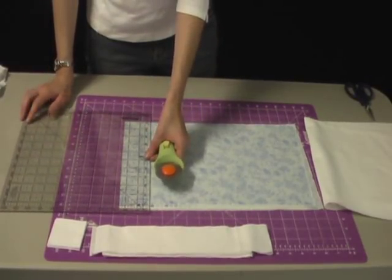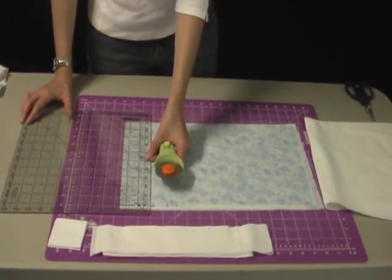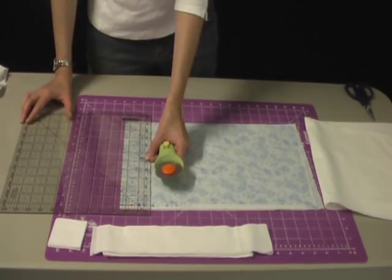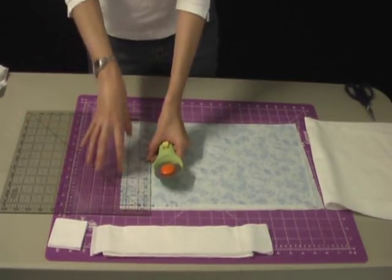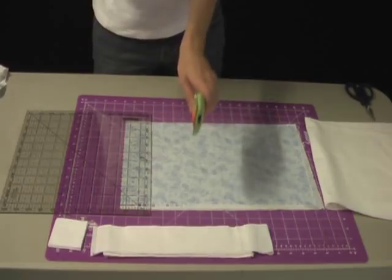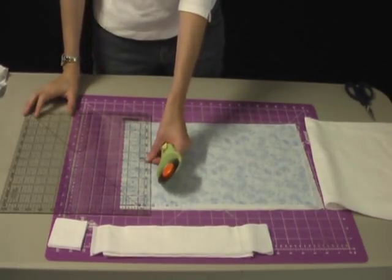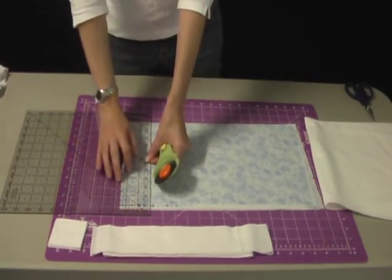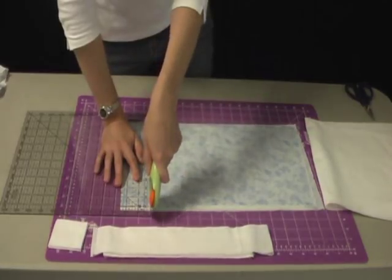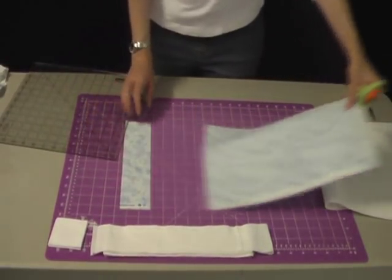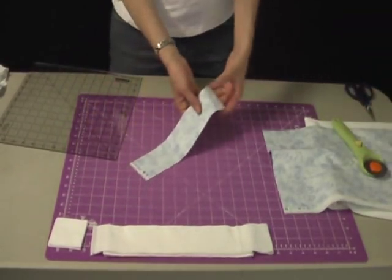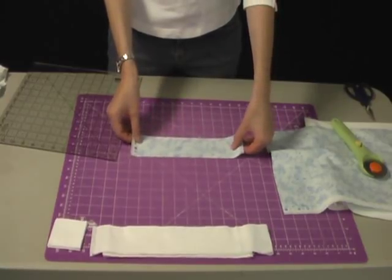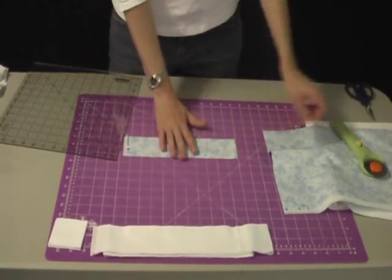I gotta say, working with a fresh blade is so much easier on your hands and on your wrists. You're not having to press so hard or press down on your rotary cutter so hard to try and get it to cut through all those layers. So much easier on your body to work with a fresh new blade. So we'll make our cut. I'm going to leave this folded in half so that way we can cut out our blocks.